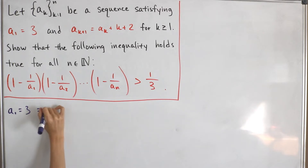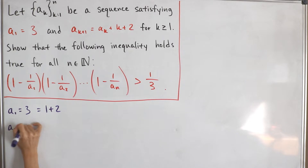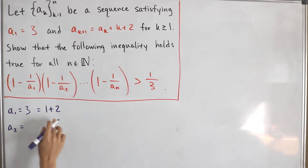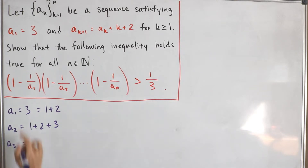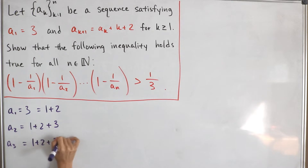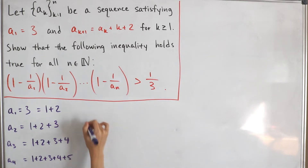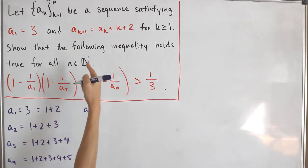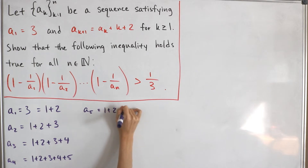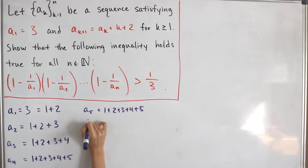I'm going to write a sub 1 as 1 plus 2 — this will come in handy as we continue. For a sub 2, that's a sub 1 plus 1 plus 2, which is 1 plus 2 plus 3. For a sub 3, that's a sub 2 plus 2 plus 2, giving 1 plus 2 plus 3 plus 4. For a sub 4, that's a sub 3 plus 3 plus 2, so 1 plus 2 plus 3 plus 4 plus 5. For a sub 5, that's a sub 4 plus 4 plus 2, giving 1 plus 2 plus 3 plus 4 plus 5 plus 6. We can see the pattern: these are sums of consecutive natural numbers.